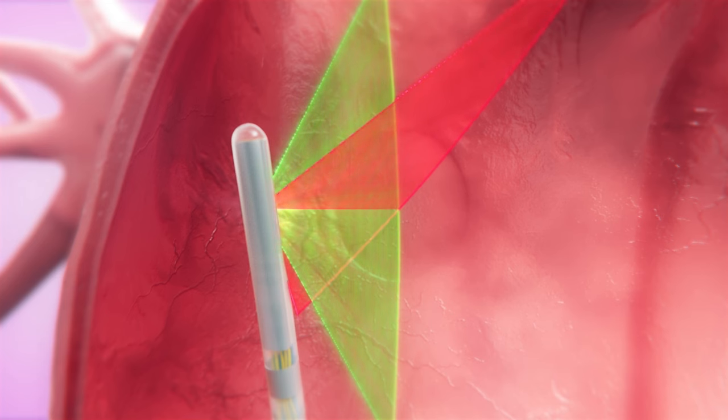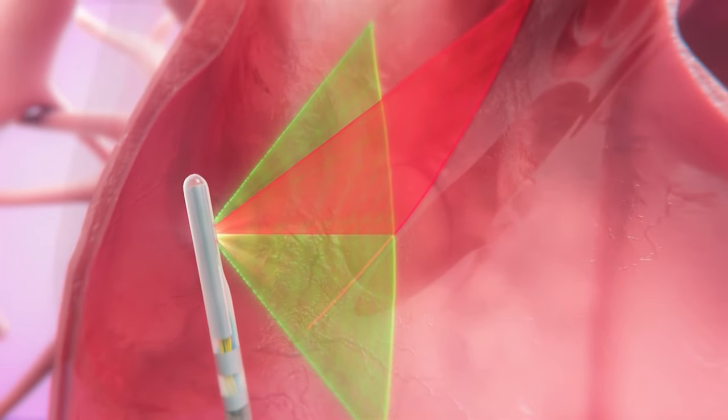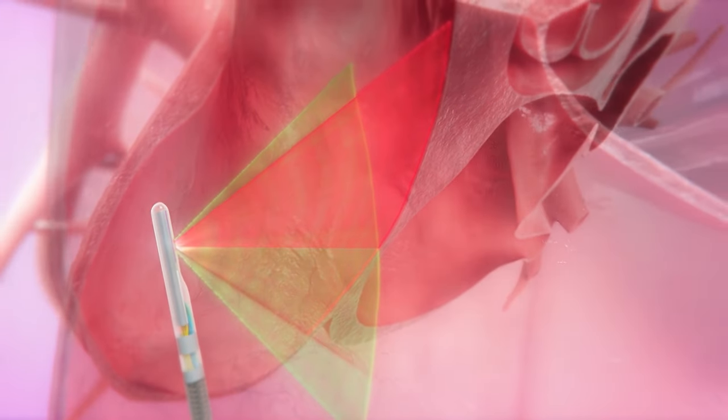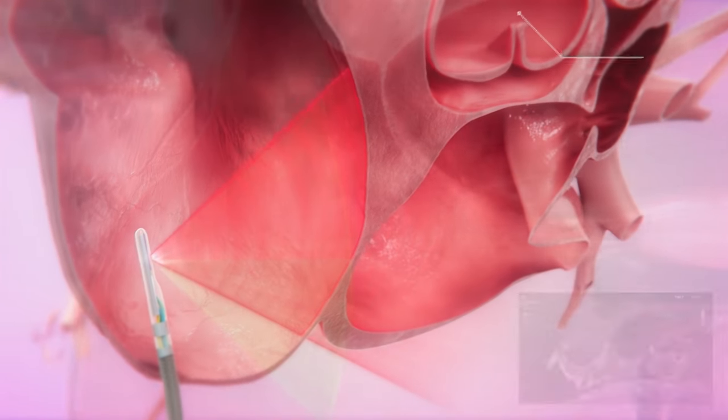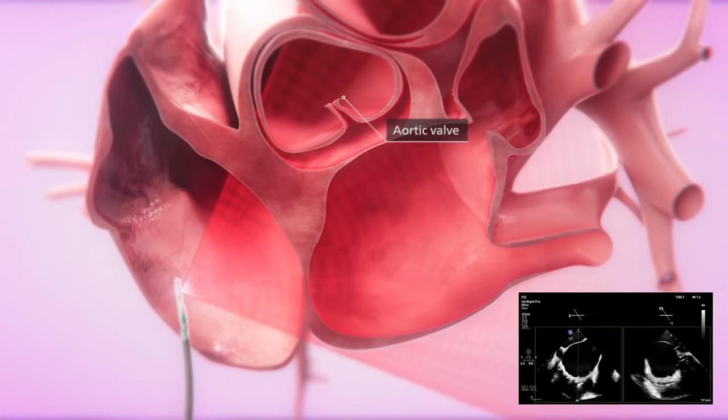X-plane provides two simultaneous images visualizing both the superior, inferior and anterior and posterior planes. This combined imaging allows for more accurate navigation, reducing the need for manual manipulation of the catheter.